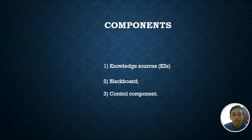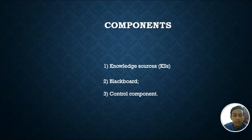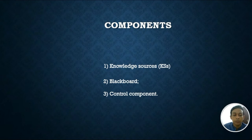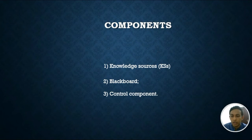Communication and interaction between knowledge sources take place through the blackboard. The control component contains information within the source, the blackboard, or a separate module — it monitors changes on the blackboard and determines what the immediate focus of attention should be in solving the problem. Knowledge sources are independent modules containing the knowledge needed for problem solving. They don't need to know about each other's existence, but they must understand the state of the problem-solving process and the representation of relevant information on the blackboard.